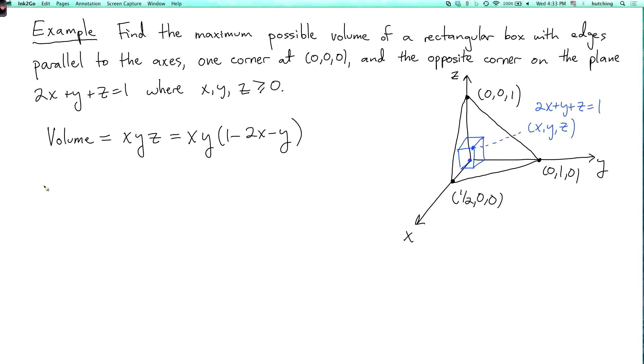Okay, so we can define f(x, y) equals x times y times (1 minus 2x minus y). And we want to maximize f.